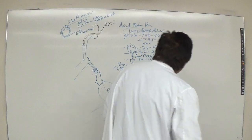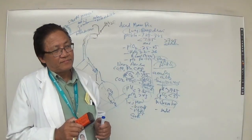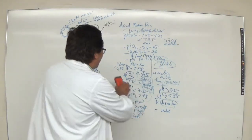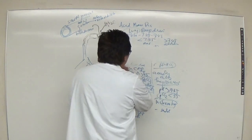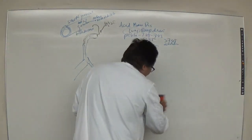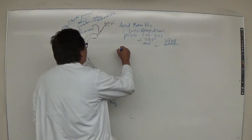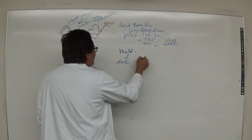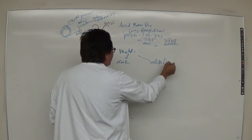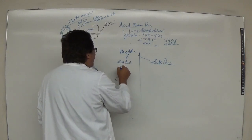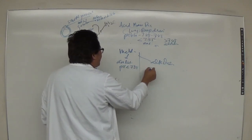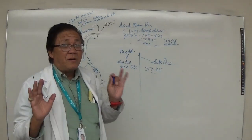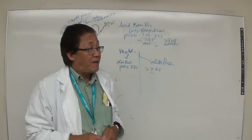Metabolic disorders involve anything that does not involve the lung. You have two types: metabolic acidosis and metabolic alkalosis. The pH in metabolic acidosis is less than 7.35; in metabolic alkalosis, the pH is greater than 7.45.